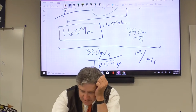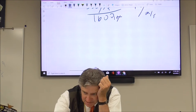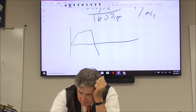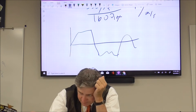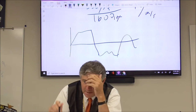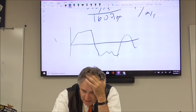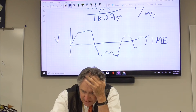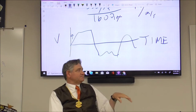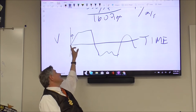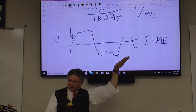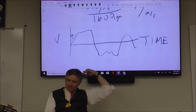Let's talk about that last velocity-time graph on number thirteen, because this is going to play out in the lab you're doing today. So this looks something like this with some dipsy-doos. Here's the velocity, here's time. Everybody gets the idea that it's speeding up — you're starting from rest, you're speeding up, you have positive velocity and positive acceleration.